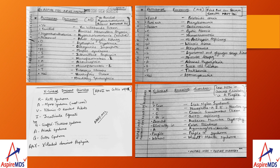For autosomal dominant disorders, the mnemonic is 'ABOVE FAMILIAL HYPERCHOLESTEROLEMIA AUTOSOMAL DOMINANT HAIR.' Diseases in this category include familial adenomatous polyposis, hypercholesterolemia, adult polycystic kidney disease, myotonic dystrophy, osteogenesis imperfecta, Marfan syndrome, intermittent porphyria, neurofibromatosis 1 and 2, achondroplasia, tuberous sclerosis, Huntington's disease, and hereditary spherocytosis.